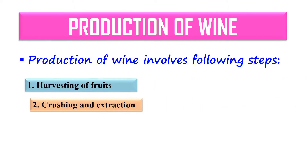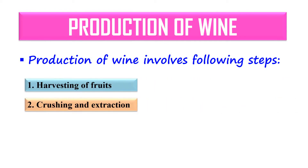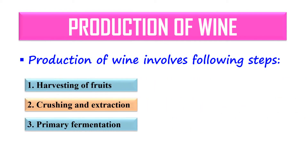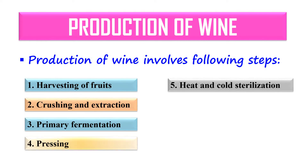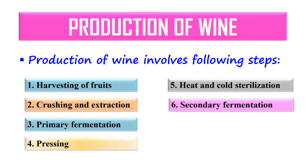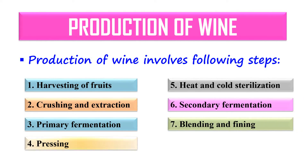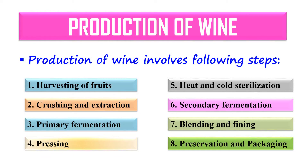The steps involved are: harvesting of fruits, crushing and extraction, primary fermentation, pressing, heat and cold sterilization, secondary fermentation, blending and fining, and finally preservation and packaging. Let's discuss these steps.